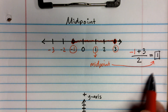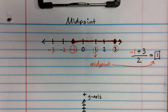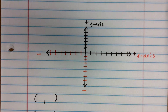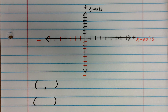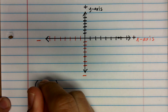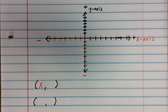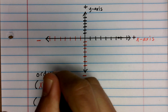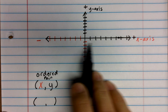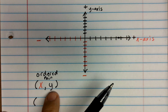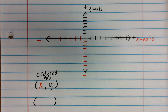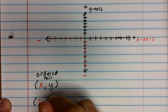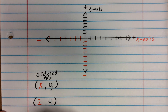Now we're going to take this idea of how to find a midpoint mathematically and apply it to the coordinate plane. When we talk about points on a coordinate plane, we use ordered pairs — the x value is first (left and right on the x-axis) and the y value comes second (up and down on the y-axis). Our first ordered pair will be (2, 4) and our second ordered pair will be (−4, 4).